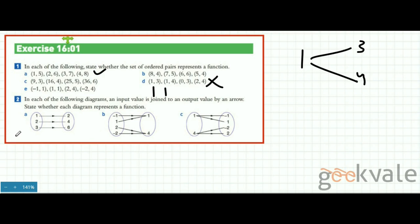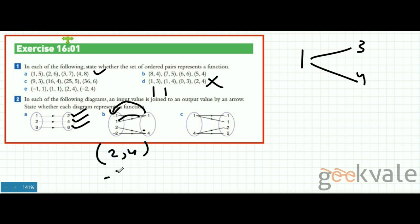Question 2 says: in each of the following diagrams, an input value is joined to an output value by an arrow — state whether each diagram represents a function. Looking at the first diagram, each input is unique. We have two inputs mapping to one output, with minus 1 and plus 1 as separate unique inputs. The input is not repeated, so the output has a unique input.